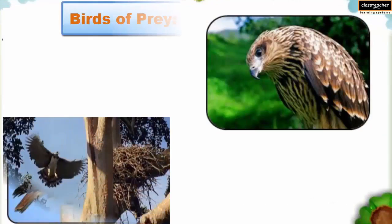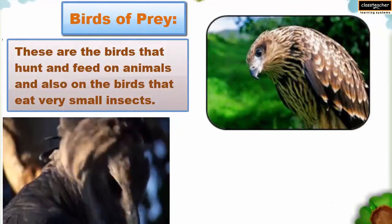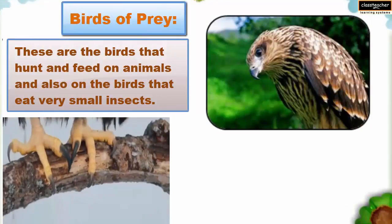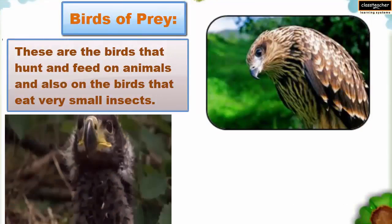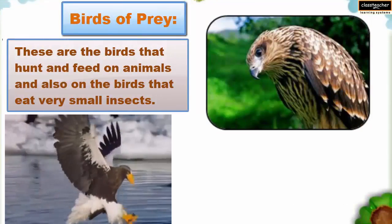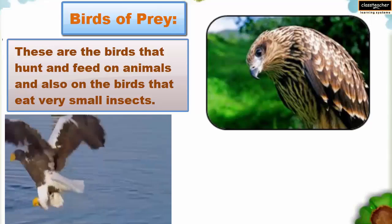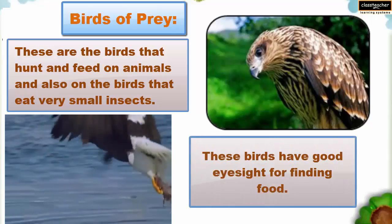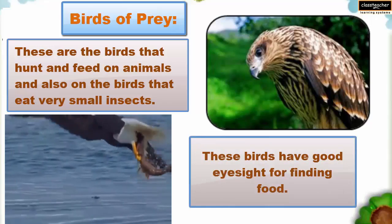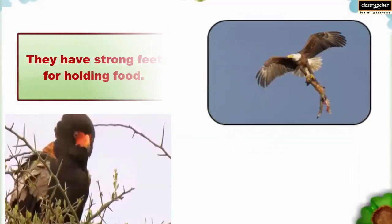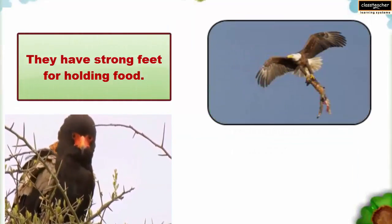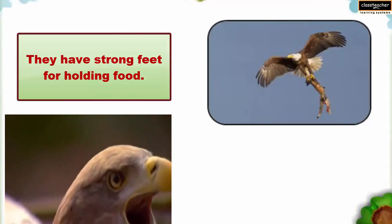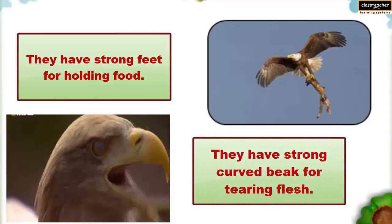Birds of Prey: These are the birds that hunt and feed on animals and also on the birds that eat very small insects. These birds have good eyesight for finding food. They have strong feet for holding food and a strong curved beak for tearing flesh.